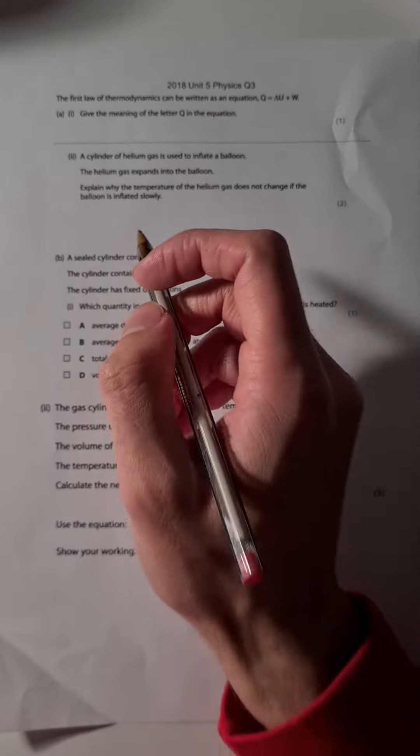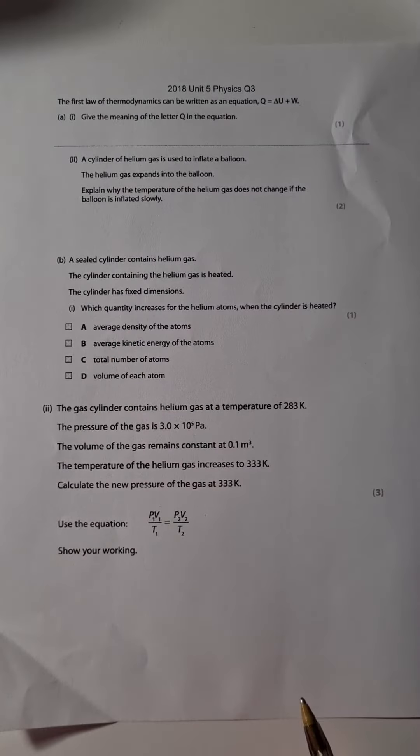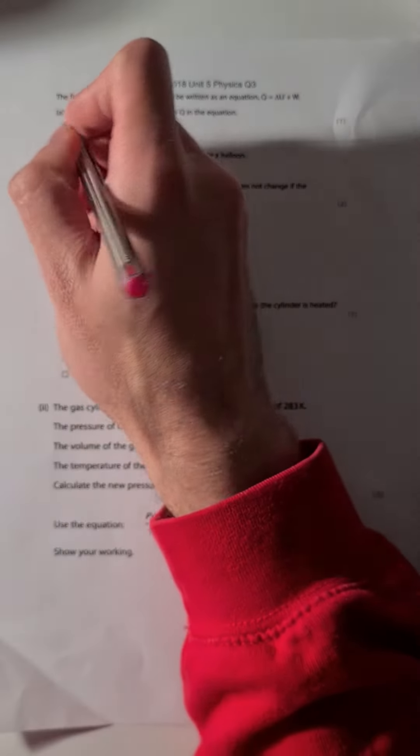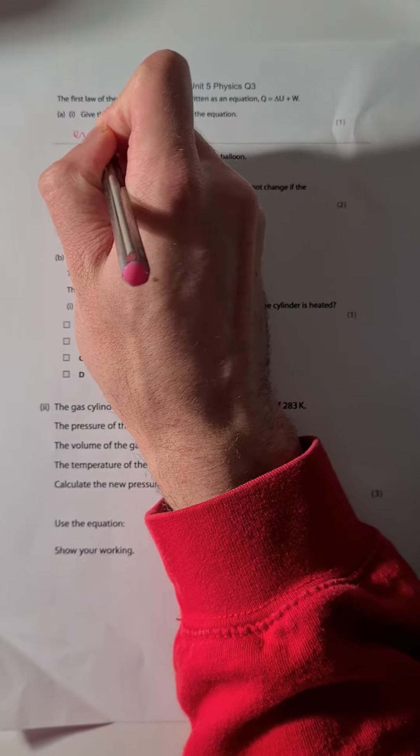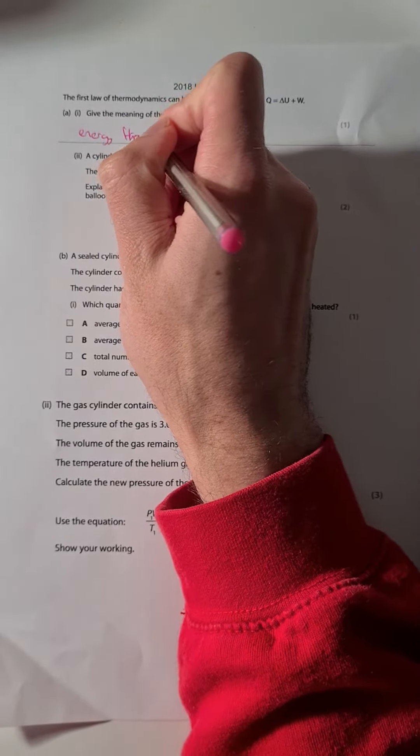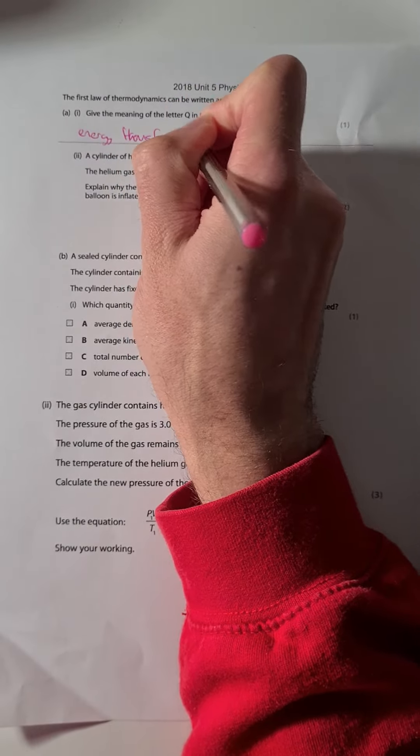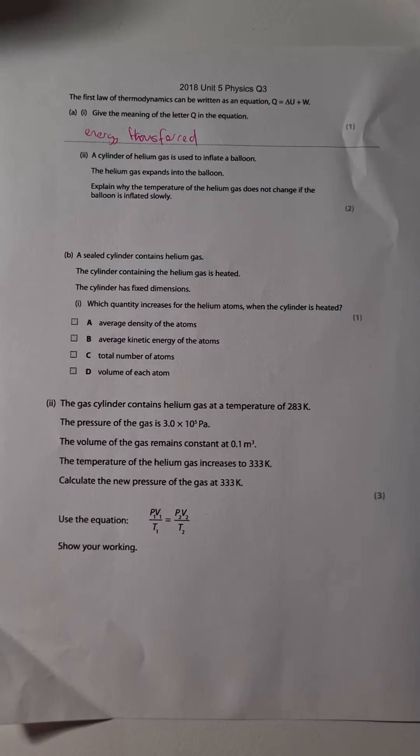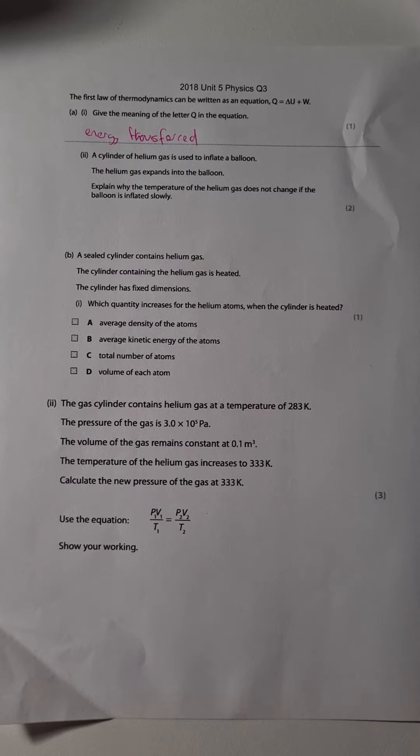We'll start then. Give the meaning of the letter Q in the equation Q equals delta U plus W. Q is the energy transferred, or the heat energy transferred, or the energy supplied. Energy transferred.